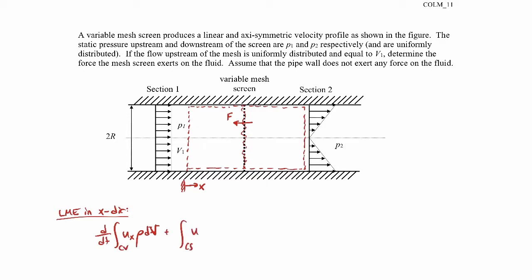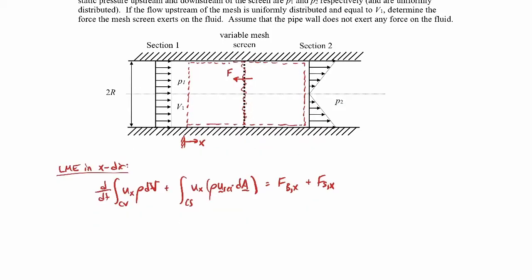We'll write out the full linear momentum equation — it's always a good idea to start with the basic equation first and then simplify it. We're using a fixed coordinate system, so it's inertial, and I don't have to worry about any acceleration terms. The first term is the time rate of change of x linear momentum within the control volume. This is going to be zero because we're assuming steady flow — the flow through this pipe channel doesn't change with time. It's always a good idea to indicate why something is zero, so I'll note 'steady' in parentheses.